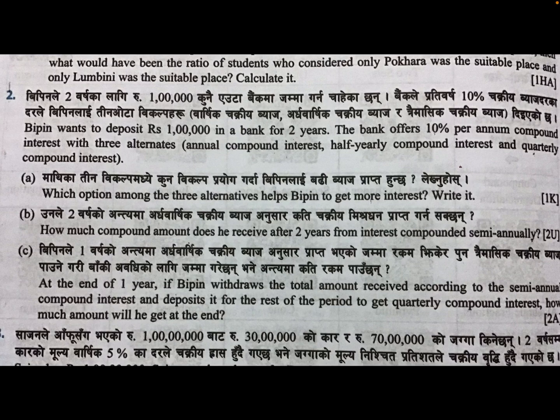BPN wants to deposit rupees 1,00,000 in a bank for two years. The bank offers 10% per annum compound interest with three alternatives: annual compound interest, half yearly compound interest, and quarterly compound interest. Three options are there in the bank.